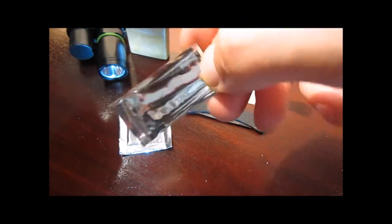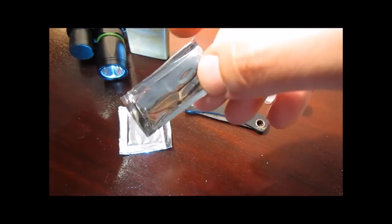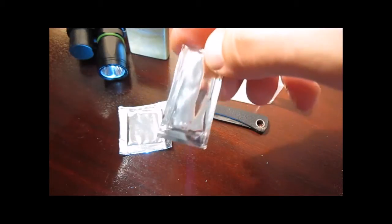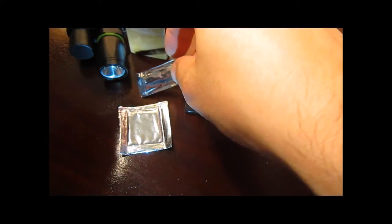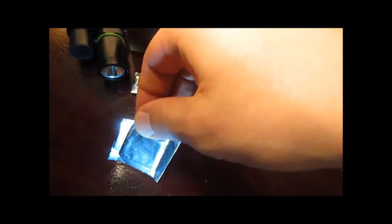Alongside that, also some matches with striker, again sealed in mylar for total waterproofing. This can be used as a reflective material also to signal.